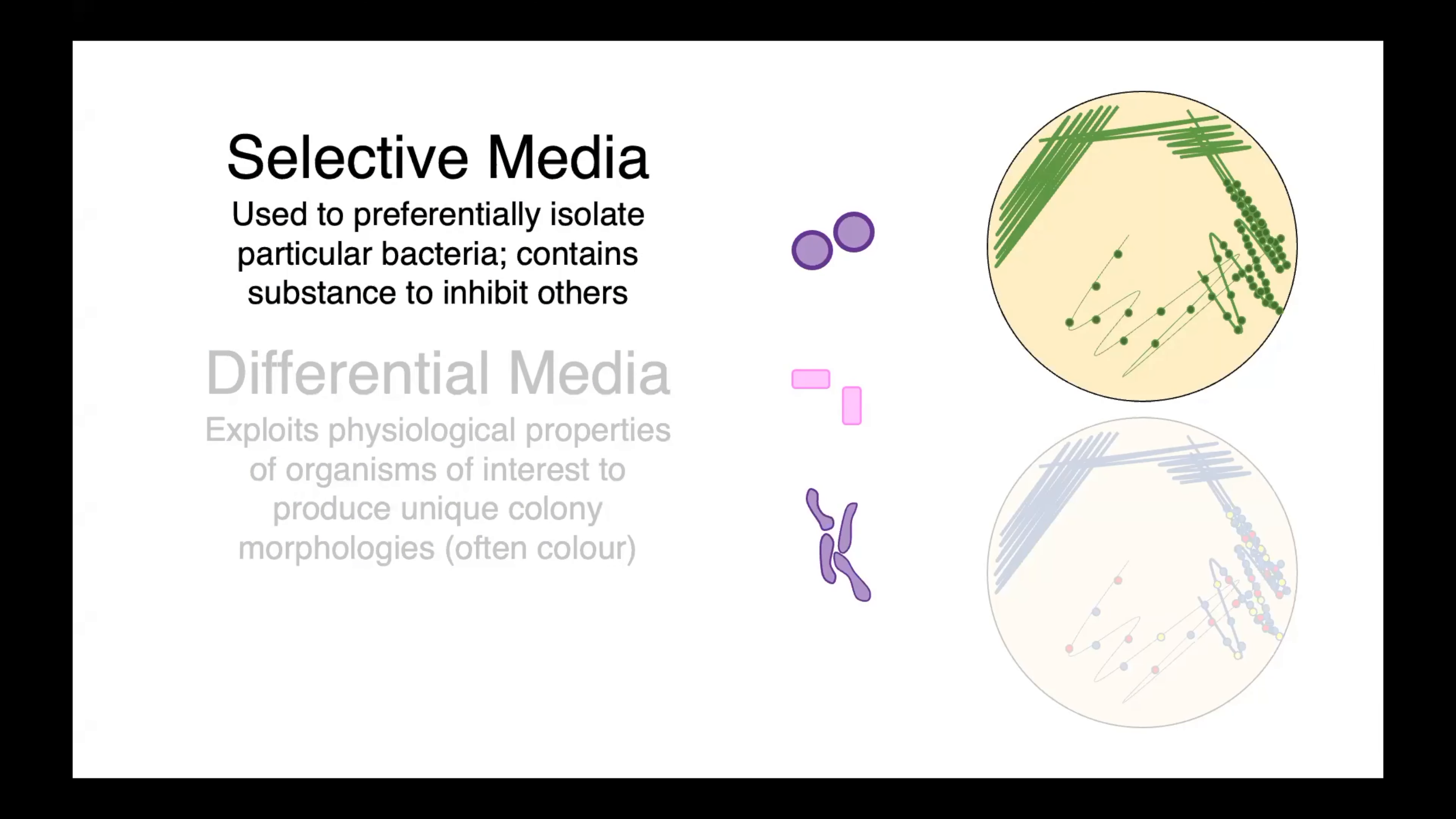One of the tools that we can use are selective and differential media. Selective media is very useful for isolating particular bacterial species or genera. It contains substances which are inhibitory towards other bacteria, allowing us to focus in on only the ones we're interested in. In this example here, we have three different bacterial species, a gram positive cocci, gram negative rods, and a gram positive rod. And you can see when we plate those onto this selective media, only the gram negative rods are able to grow, forming these green colonies.